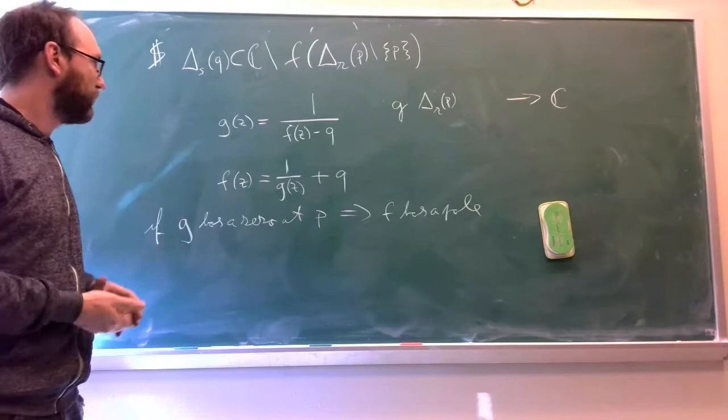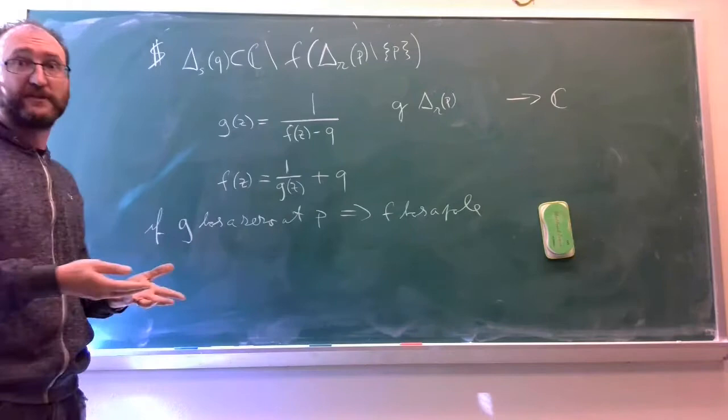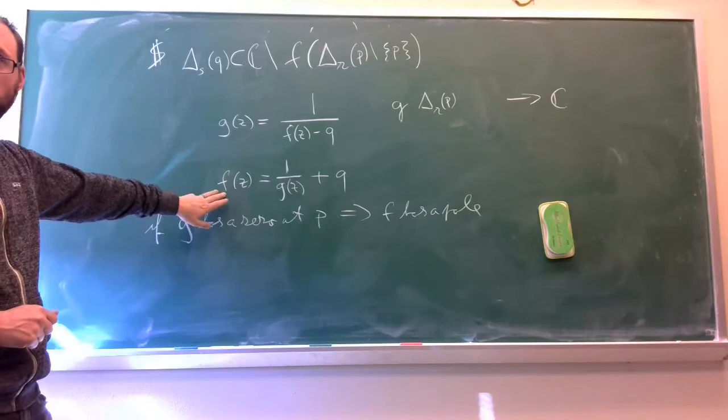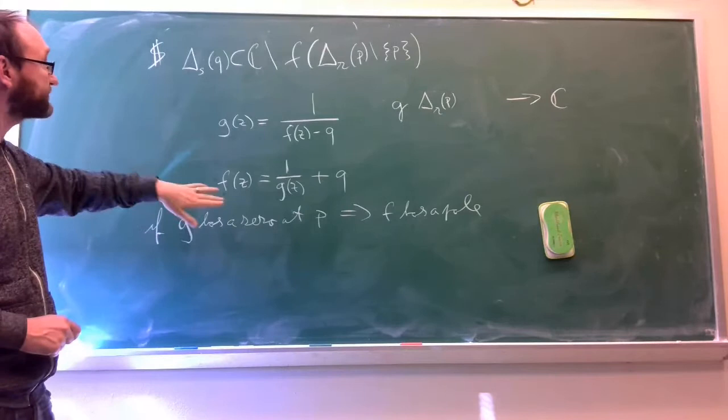So if g has a zero at p, then f has a pole. We saw that before. 1 over something with a zero of order k will give you a pole of order k.